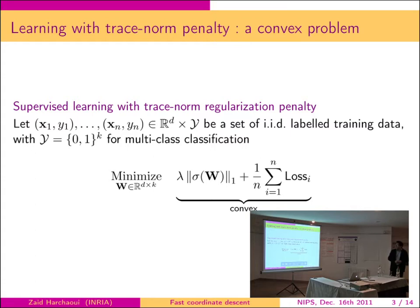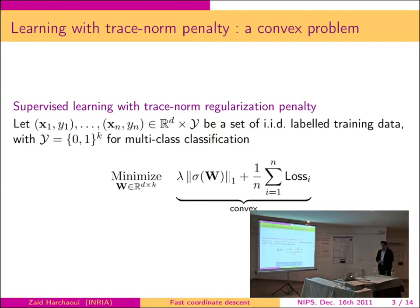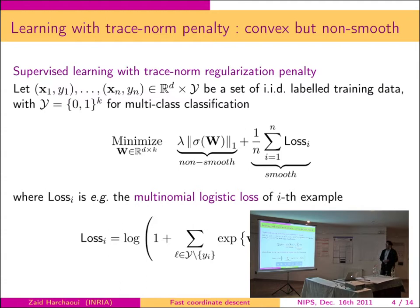A common regularization penalty that allows to scale to large supervised learning problems is the trace norm regularization penalty. It's just an L1 norm on the singular value spectrum of the rectangular matrix W. Then we have a convex optimization problem, so we could think it's an easy problem to solve. The issue is that even though we take a smooth loss function, such as the multinomial logistic loss on the right-hand side, we still have a non-smooth regularization penalty term on the left side.